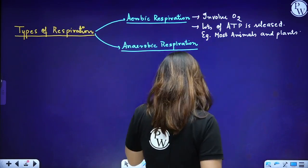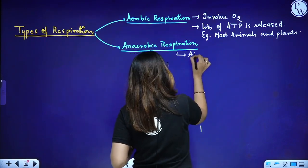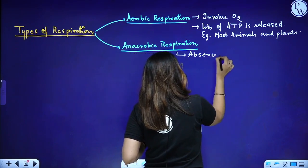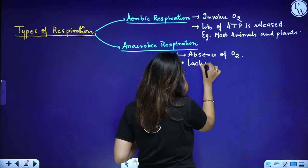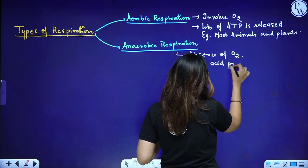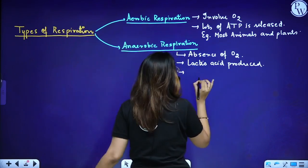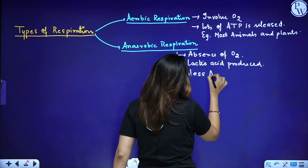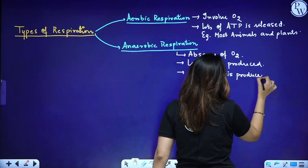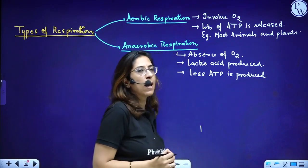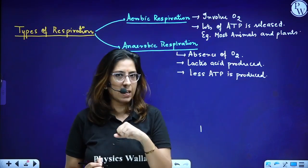Anaerobic respiration means breakdown in the absence of oxygen. Here, lactic acid is produced and the amount of energy released is less compared to aerobic respiration — that means less ATP is produced. Examples are some parasites like Ascaris, those forms which live inside our body.